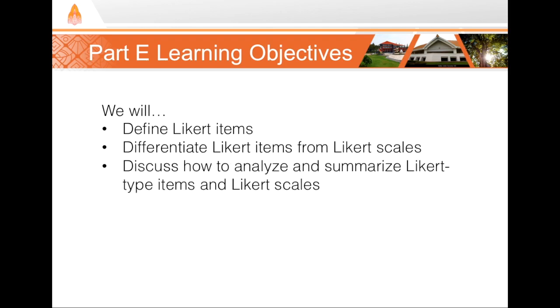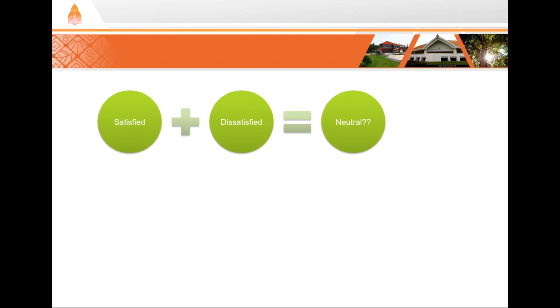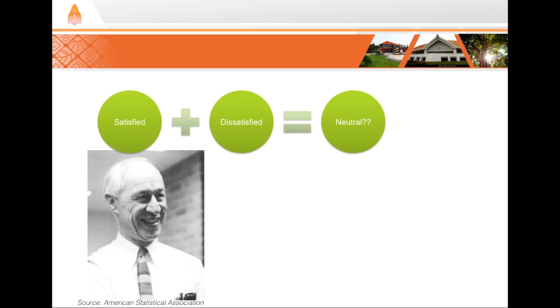In session 18, Part E, we'll define what a Likert item is and how it differs from a Likert scale, then discuss how to analyze and summarize data collected using Likert items and scales. In social sciences, we often want to measure character and personality traits. Transferring these qualities into quantitative measures can be difficult, and while qualitative research has become more popular, many social scientists still rely on quantitative measures. In 1932, Renis Likert, an American psychologist, developed the procedure for measuring attitudinal scales.